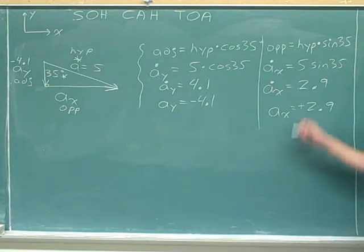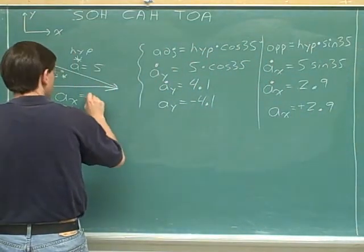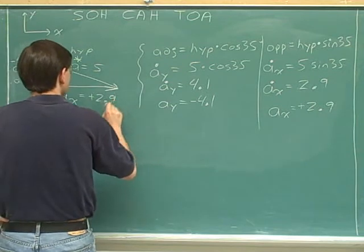Magnitudes are never negative, so we don't need to put a sign in front of them. So A sub X equals positive 2.9.